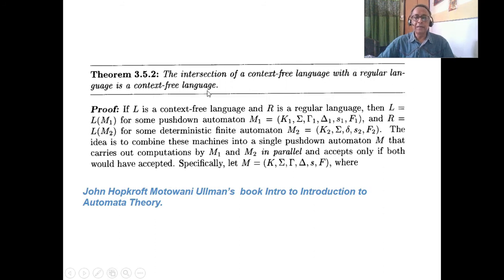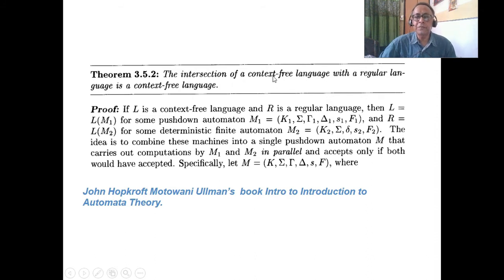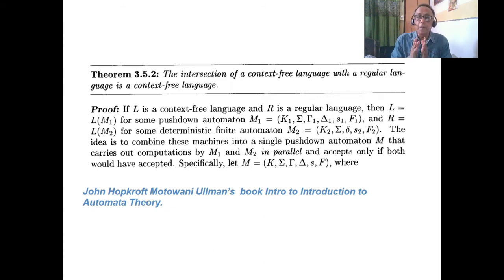The intersection of a context-free language with a regular language is a context-free language. Regular grammar is closed under union, concatenation, reverse operation — everything is closed. But context-free grammar behaves very differently. Deterministic context-free grammar has another peculiar property: the complement of a deterministic context-free grammar is a deterministic context-free grammar, but the complement of a general context-free grammar may or may not be context-free.